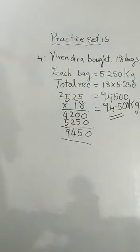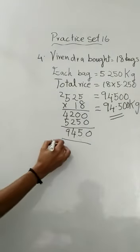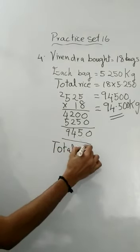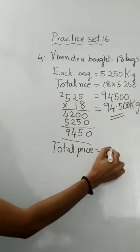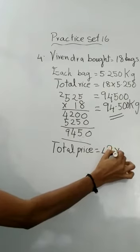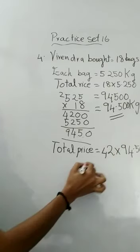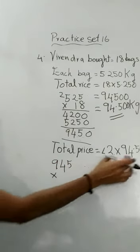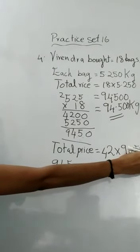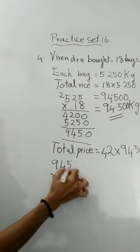There is one more part: 42 rupees per kg, and we have 94.500 kg. So the total price is 42 into 94.500. To simplify, first multiply 945 into 42.